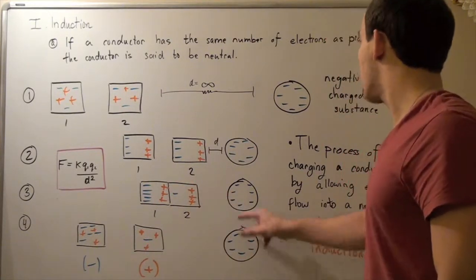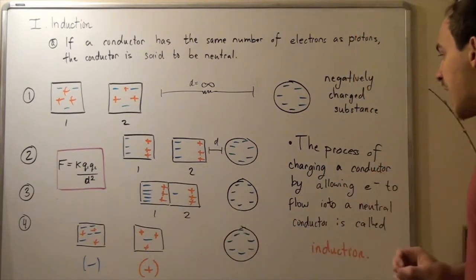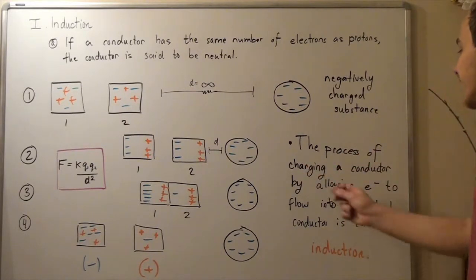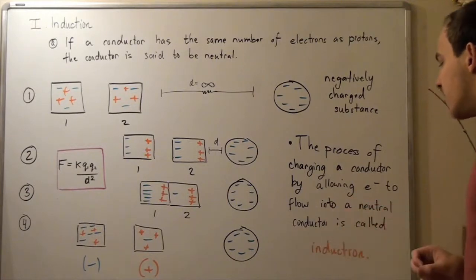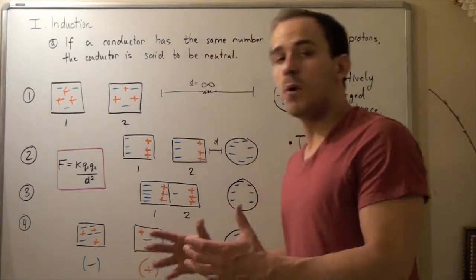Nothing will happen to this guy because this guy was not in contact with any of these guys. So the amount of charge in our negatively charged object will remain the same. The process of charging a conductor by allowing electrons to flow into a neutral conductor is called induction. This was induction. These guys were both induced.